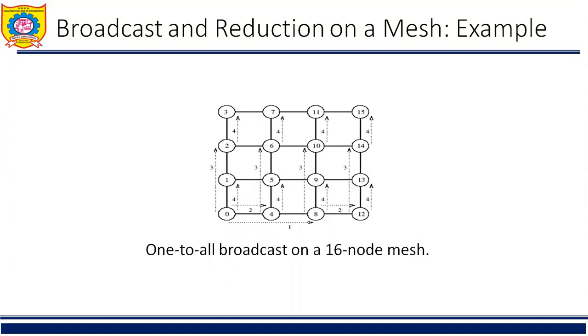For p equal to 16 with node 0 at the bottom left corner as the source, steps 1 and 2 correspond to the first phase and steps 3 and 4 correspond to the second phase. We can use a similar procedure for one-to-all broadcast on three-dimensional mesh as well. In this case, rows of p raised to 1/3 nodes in each of the three dimensions of the mesh will be treated as linear arrays. As in the case of linear arrays, reduction can be performed on two and three-dimensional meshes by simply reversing the direction and the order of messages. This is the broadcast and reduction regarding mesh.